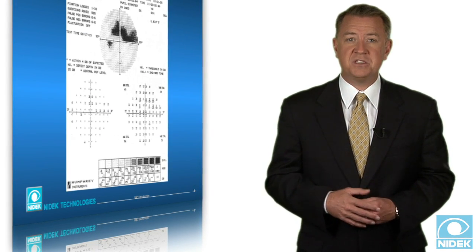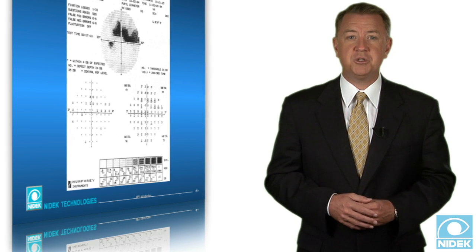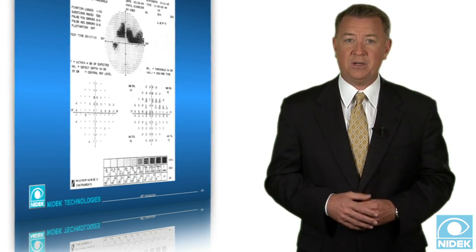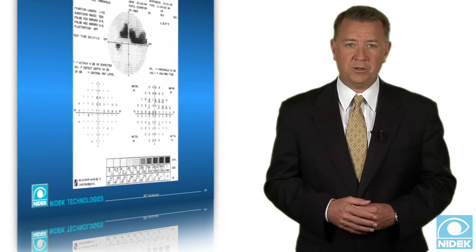Therefore, by changing the stimulus intensity, perimetry and microperimetry determine differential light sensitivity or threshold at a certain retinal point.